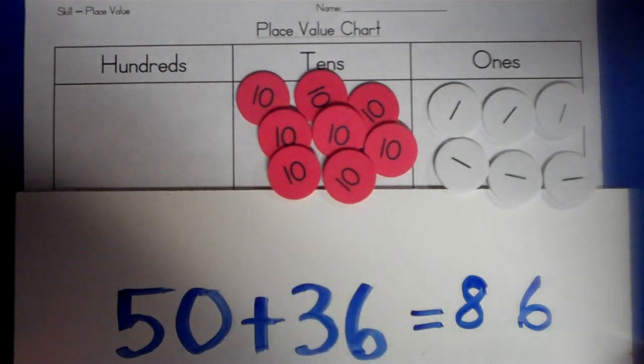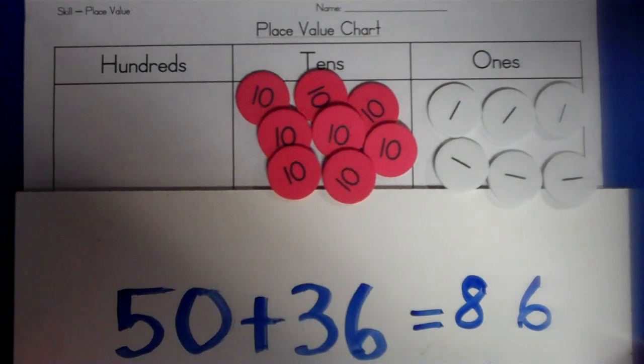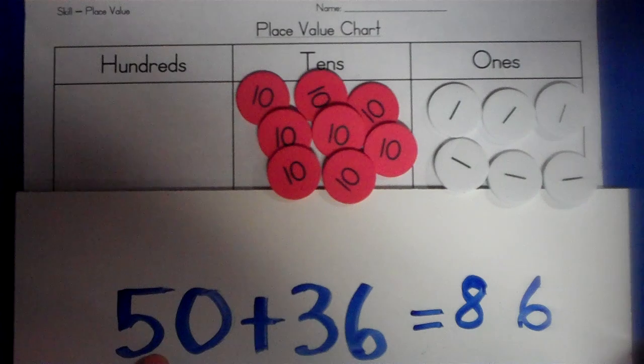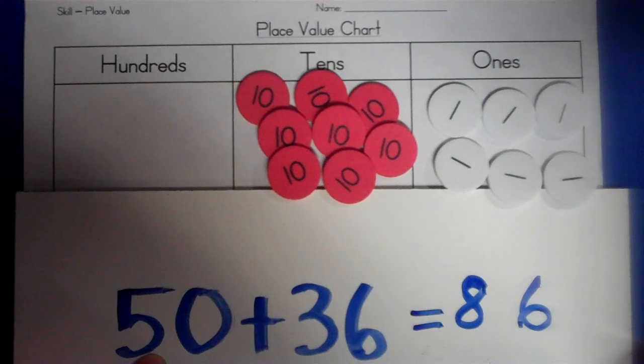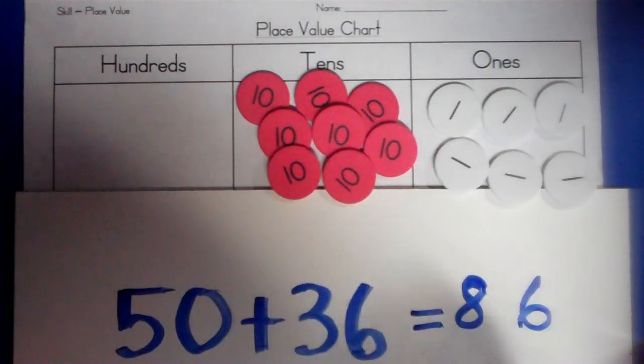So, you can do addition with two digits using place value chips, and knowing that when you are adding a certain number of tens, you're going to take out the 10 chips and put down 5 of them, and then 0 ones, and you're going to put that together with 3 tens and 6 ones. And when you do that, you have 8 tens and 6 ones.